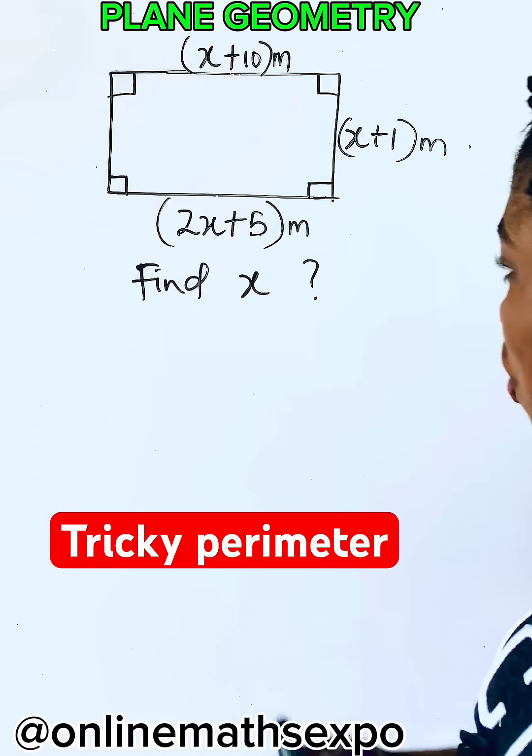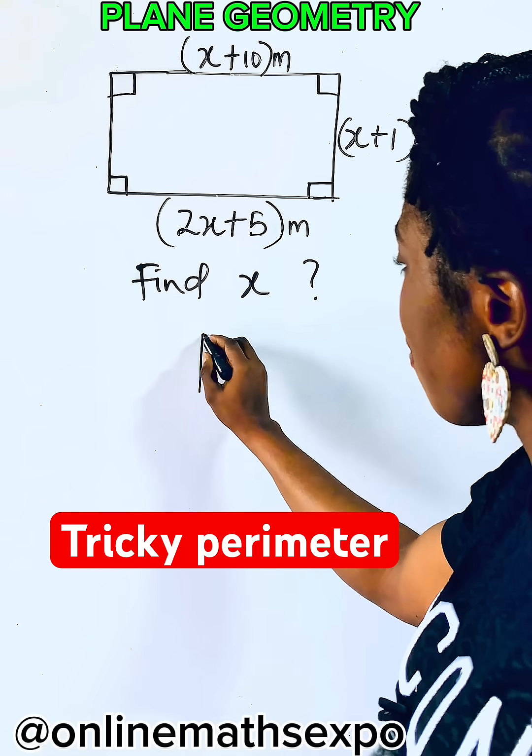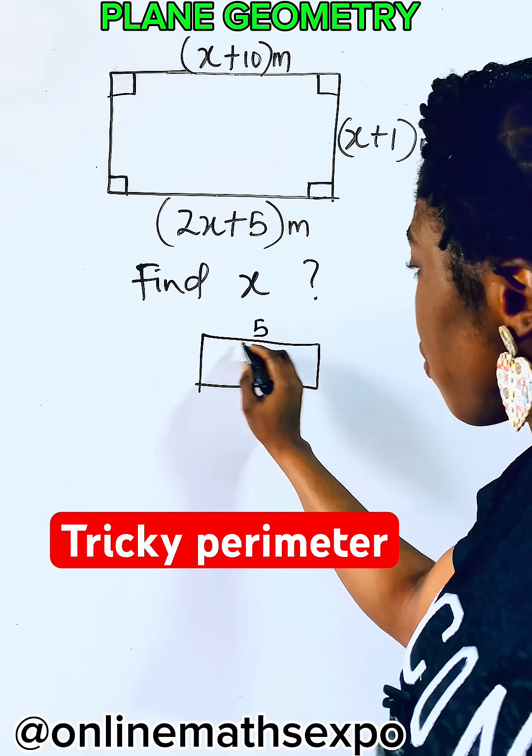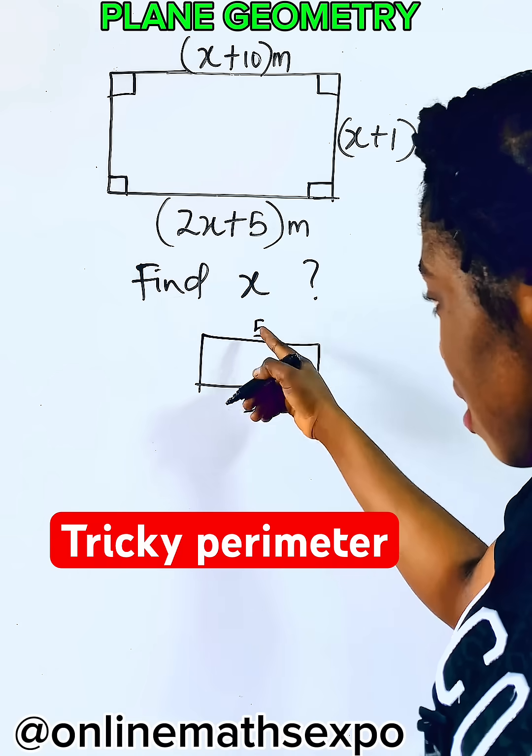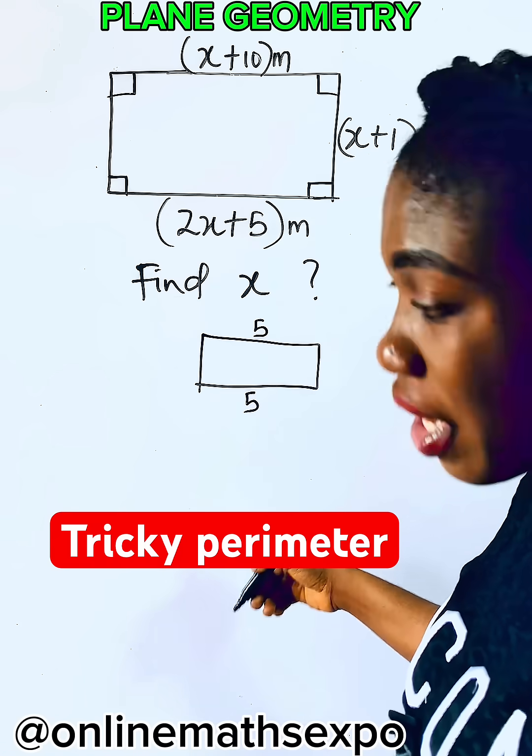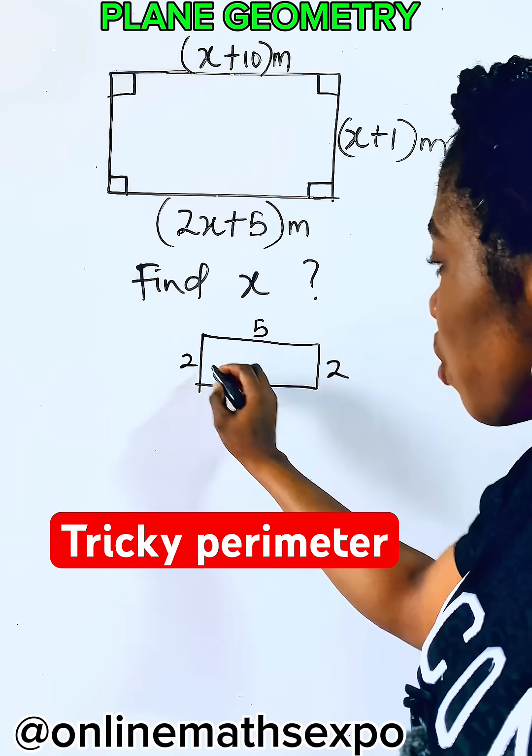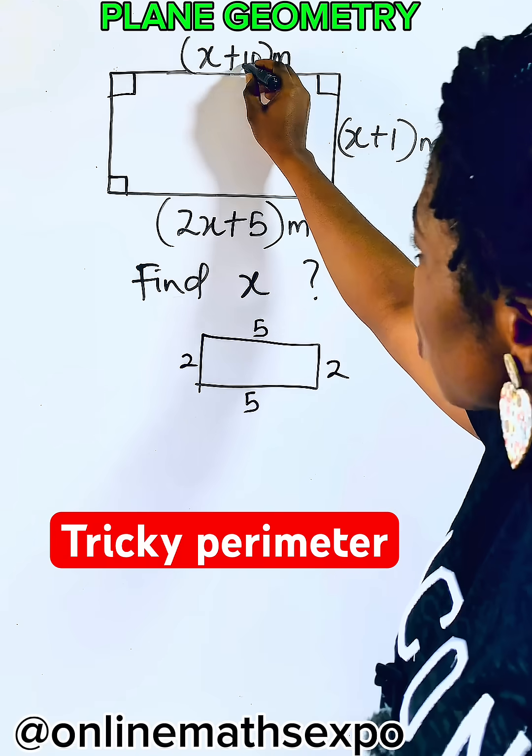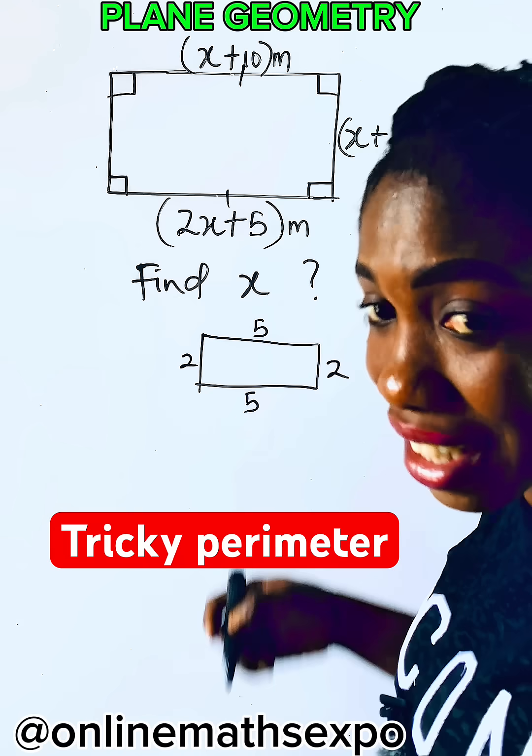And if this is a rectangle, you know too well that if you have a rectangle drawn, if here is 5, here is also 5. That means both sides are the same. And if here is 2, here will also be 2. So to answer this question, this side and this are the same.